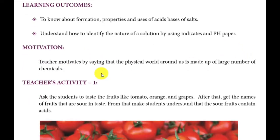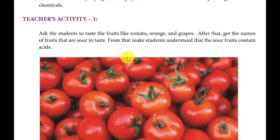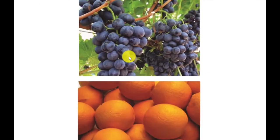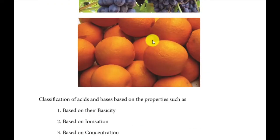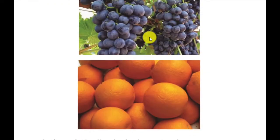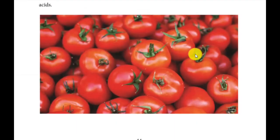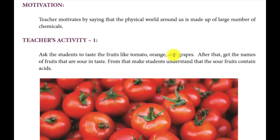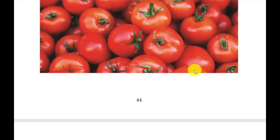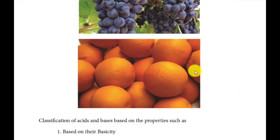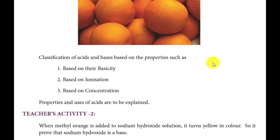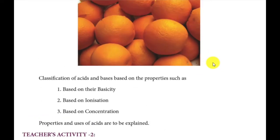In this picture, we have tomatoes, grapes, and oranges. How do you taste this? It is sour in taste. The fruit has a sour taste because it contains acid. Usually, we use all chemicals in day-to-day life, so all substances leave chemicals.